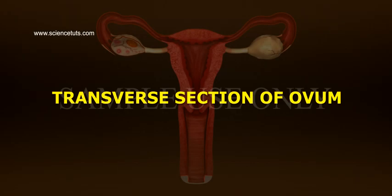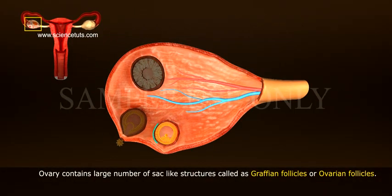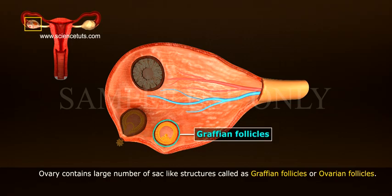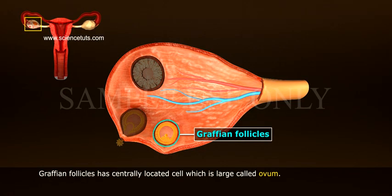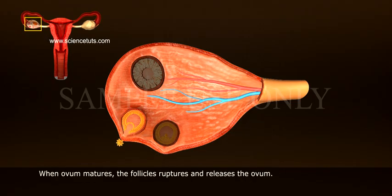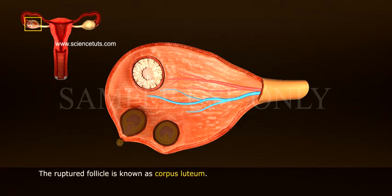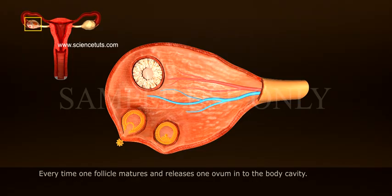The ovary contains a large number of sac-like structures called Graafian follicles or ovarian follicles. Each follicle has a centrally located large cell called the ovum. When the ovum matures, the follicle ruptures and releases the ovum. The ruptured follicle is known as corpus luteum. Every time, one follicle matures and releases one ovum into the body cavity.